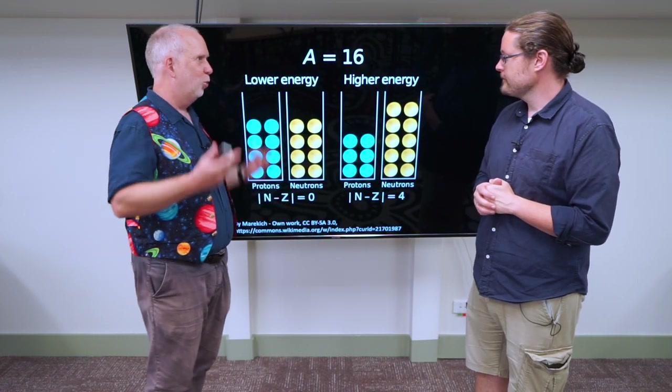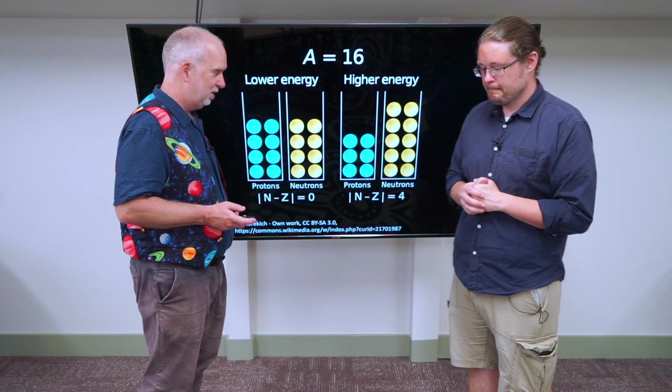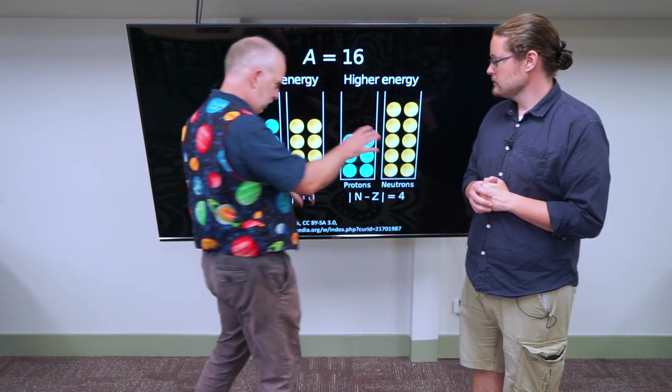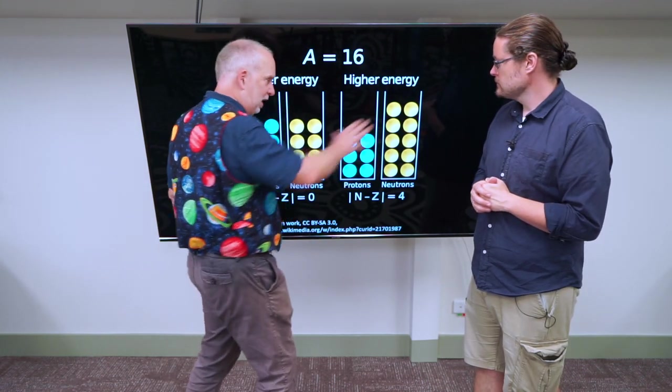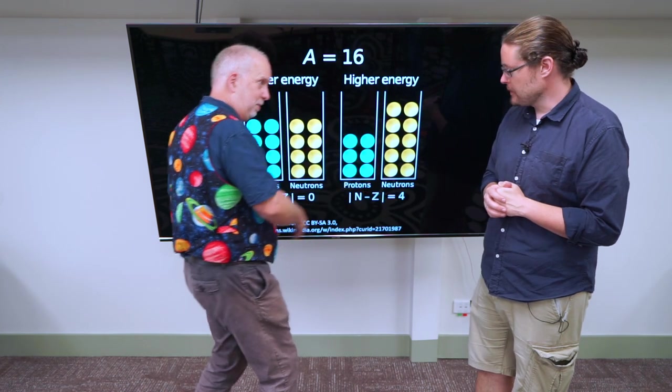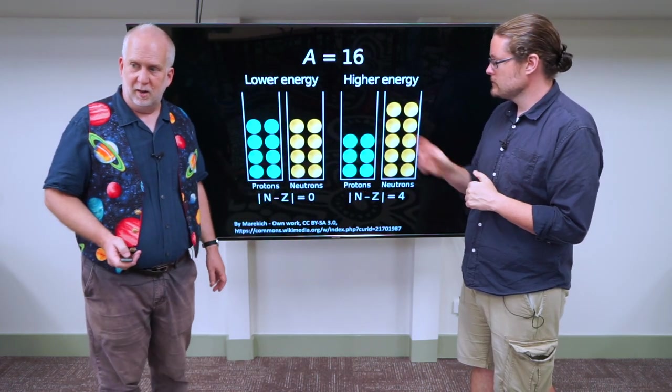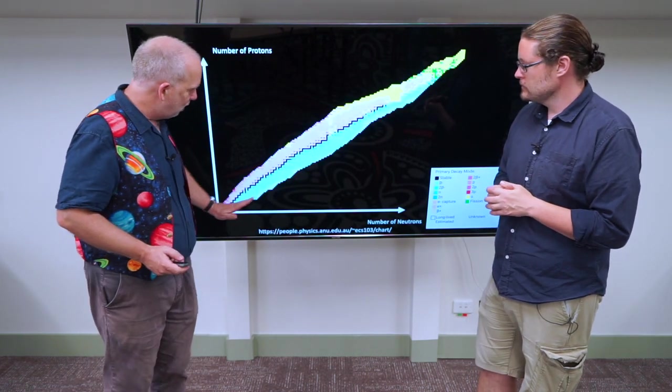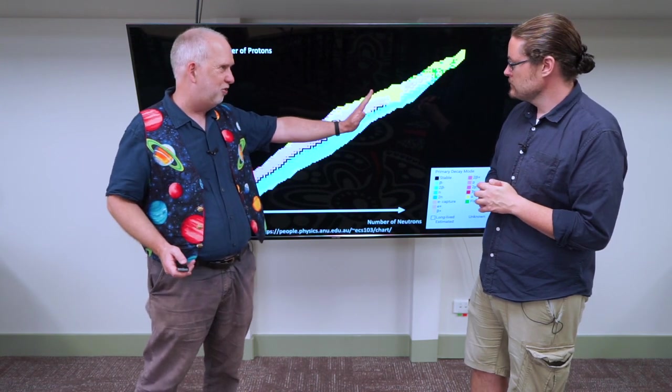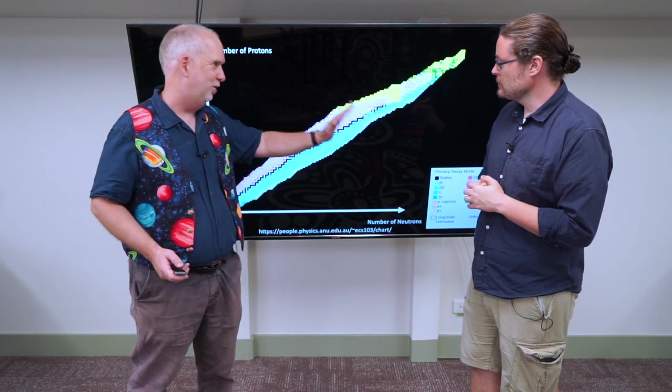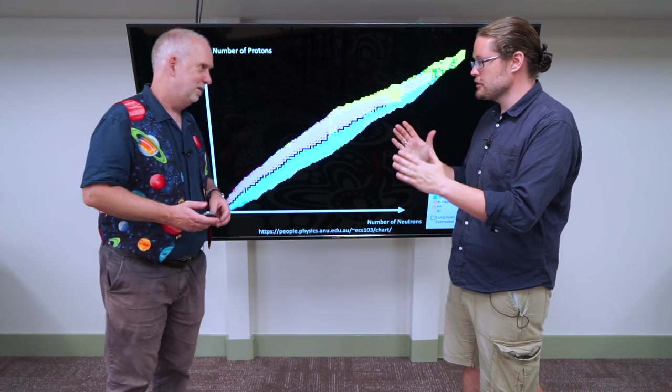So you want them to be balanced because it allows everything to be in the lowest energy state. That's why when we look at our big diagram here, you see that most things are pretty close to diagonal with roughly the same number of neutrons and protons, because it's that equal lowest energy state.